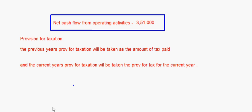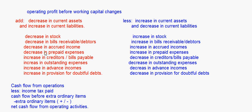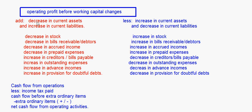In cash flow from investing and financing activities, there isn't as much to do, but cash flow from operating activities involves a lot of calculations and many items. If you miss any items or make wrong calculations, everything goes wrong, so be extra careful. The key rule: decrease in current assets and increase in current liabilities is to be added; increase in current assets and decrease in current liabilities is to be subtracted. Similarly for non-cash expenses, know what items are to be added and subtracted.